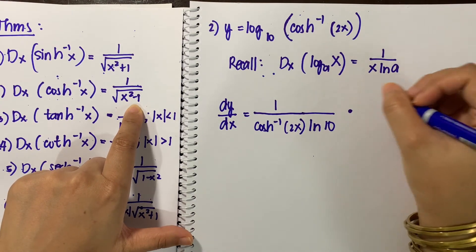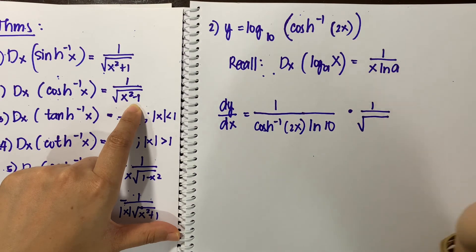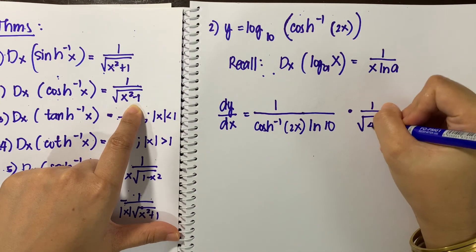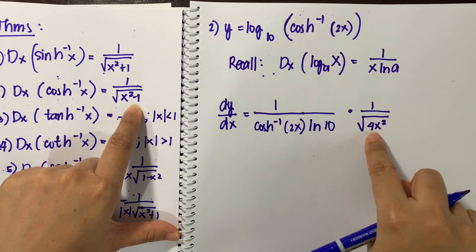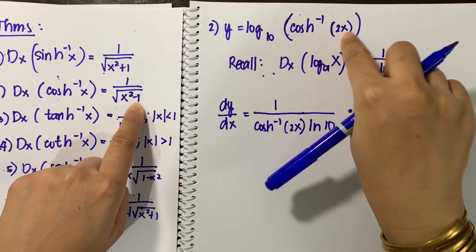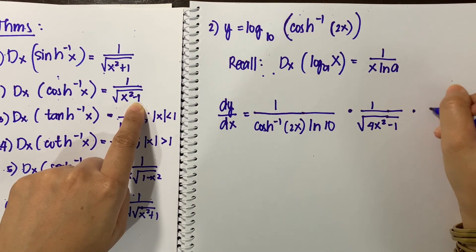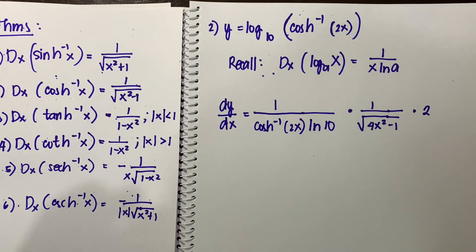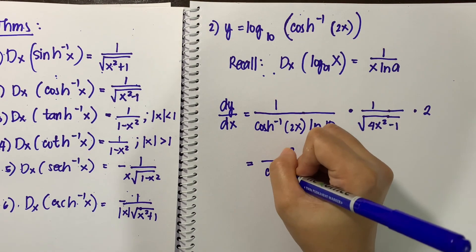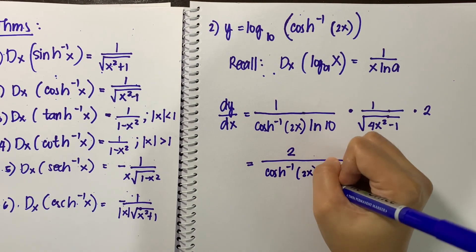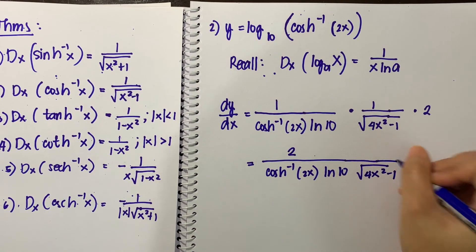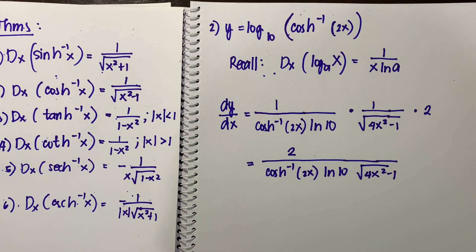Continuing with the chain rule, we also multiply by the derivative of 2x, which is 2. Combining everything, the numerator becomes 2, and the denominator is the inverse hyperbolic cosine of 2x times ln of 10 times the square root of 4x squared minus 1. This is our final answer.